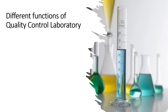Now we will discuss the different functions of quality control laboratories. The first function is raw material testing — the QC lab analyzes incoming raw materials to ensure they meet quality specifications before they are used in the manufacturing process. This may involve testing of identity, purity, potency and other relevant parameters based on internal standard testing procedures or as per different pharmacopeial monographs.